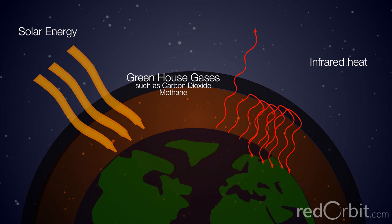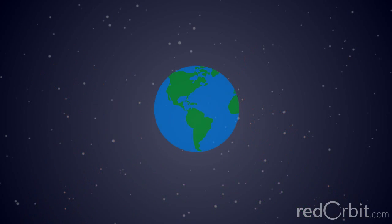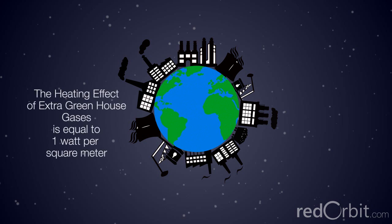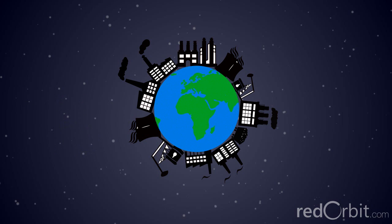Currently, the heating effect of extra greenhouse gases since the start of the Industrial Revolution from the mid-1700s to the mid-1800s is equal to about 1 watt per square meter. The recent period has recorded parallel increases in concentration of carbon dioxide and the average global temperature.